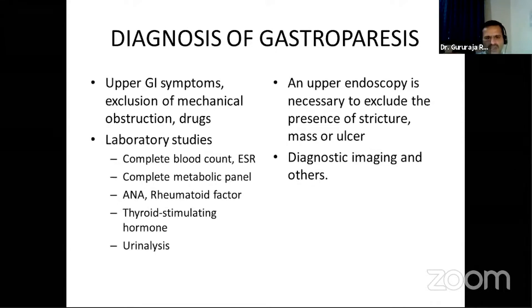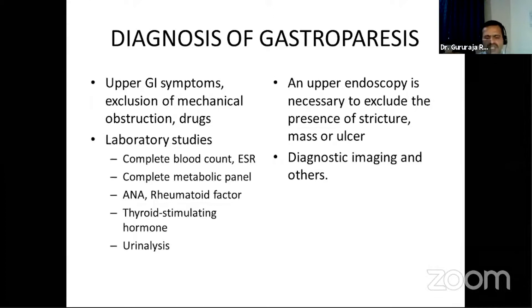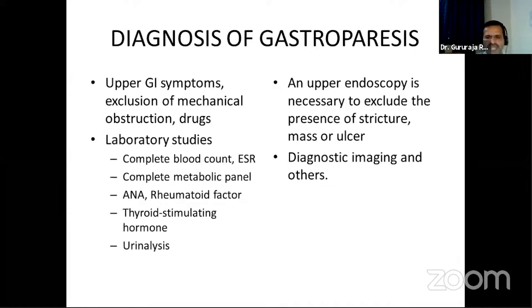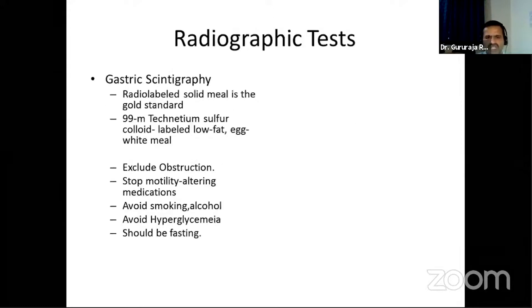Regarding diagnosis: symptoms direct us toward the diagnosis and guide investigation to exclude other causes. We must rule out mechanical obstruction and incriminating drugs. Laboratory studies are guided by clinical suspicion and include CBC, ESR, metabolic panel, ANA, rheumatoid factor (to exclude connective tissue diseases), TSH to rule out hypothyroidism, and urinalysis. Upper GI endoscopy or nuclear imaging should be performed to exclude stricture, mass, or ulcer before proceeding to specific diagnostic tests for gastroparesis.